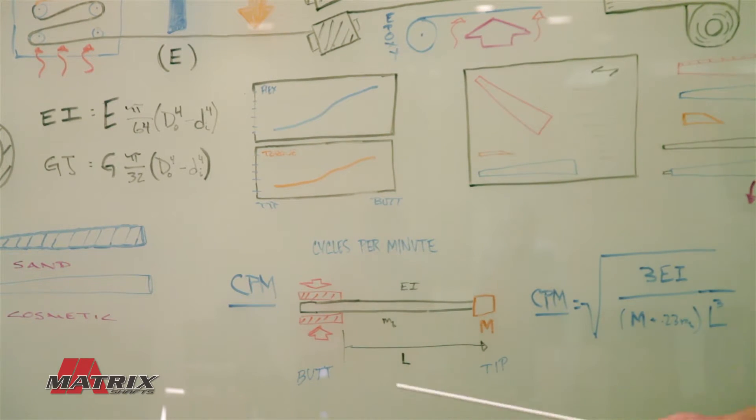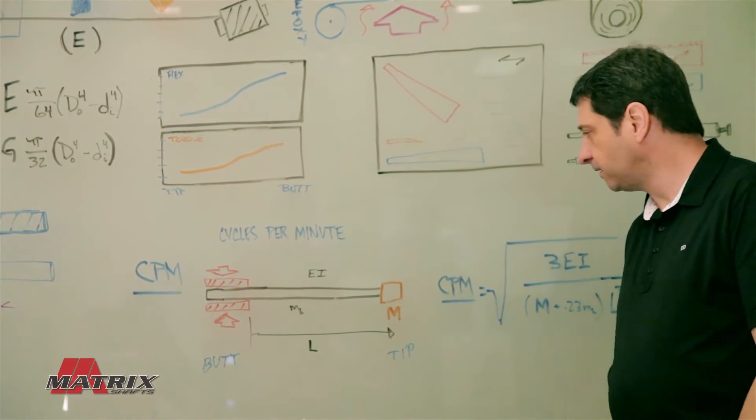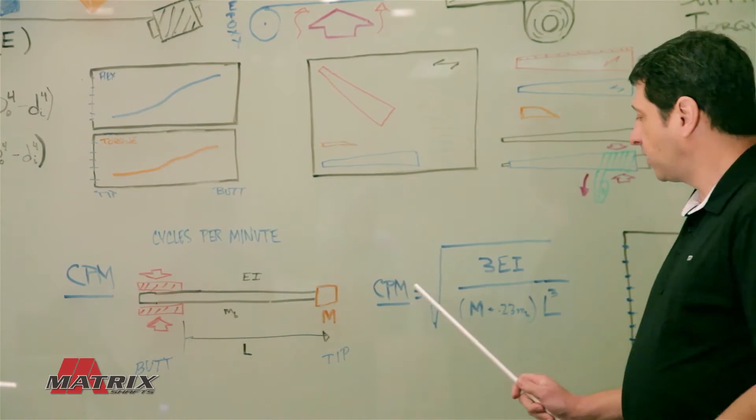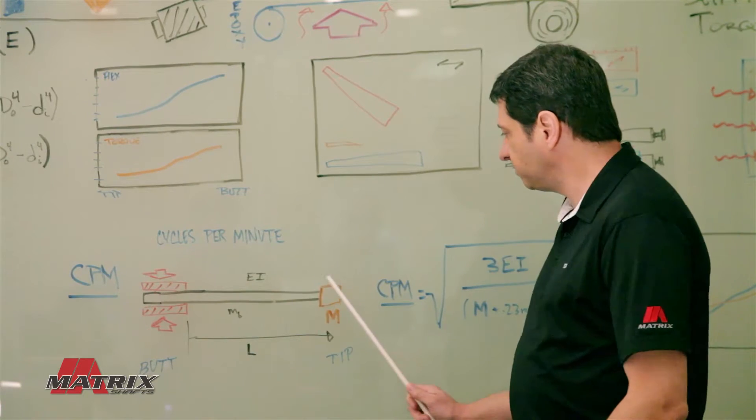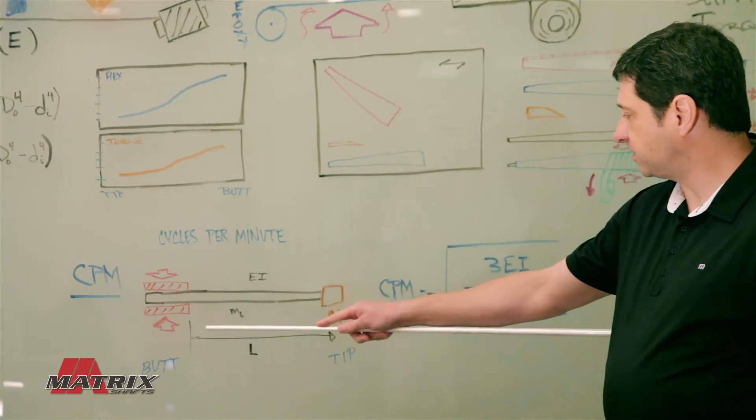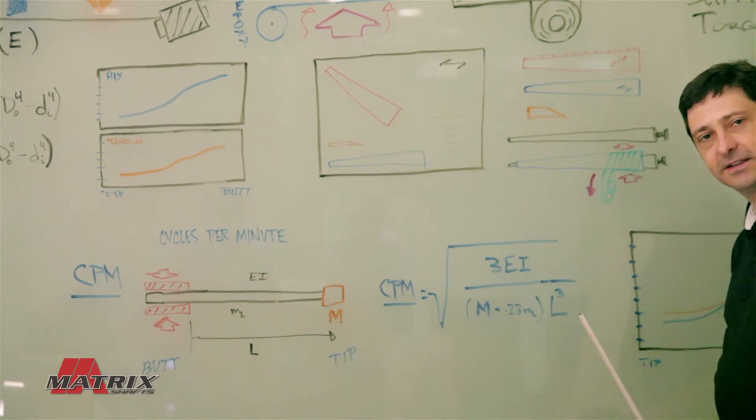So CPM stands for cycles per minute. It's also referred to as frequency. And the reason it's referred to as frequency is when you measure CPM, you have a system like this. You have a shaft that's clamped at one end and then you put a mass on the other.